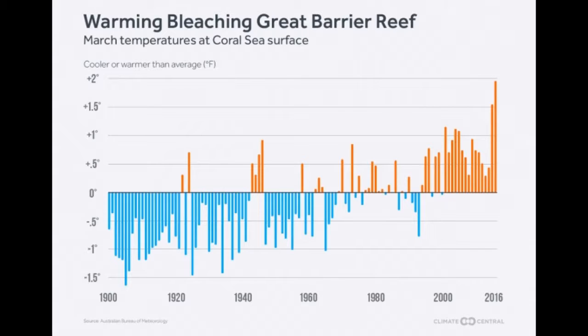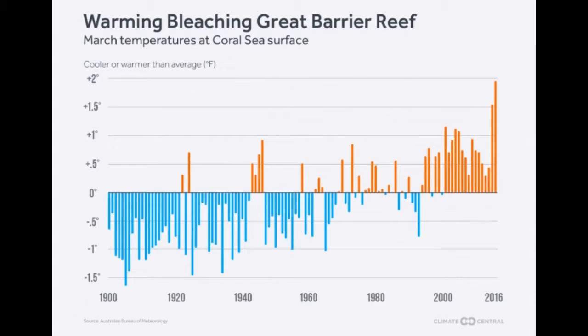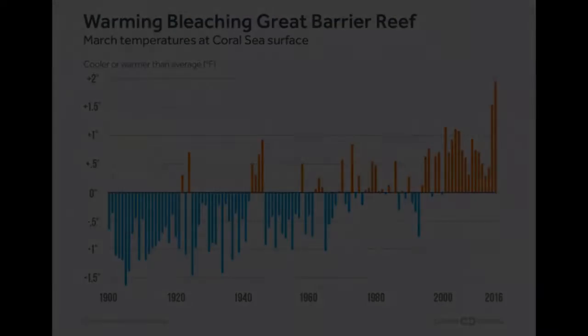The water must be clear enough for light to penetrate through so the zooxanthellae can photosynthesize. Average yearly precipitation is 78.75 inches, varying depending on the location of the reef.